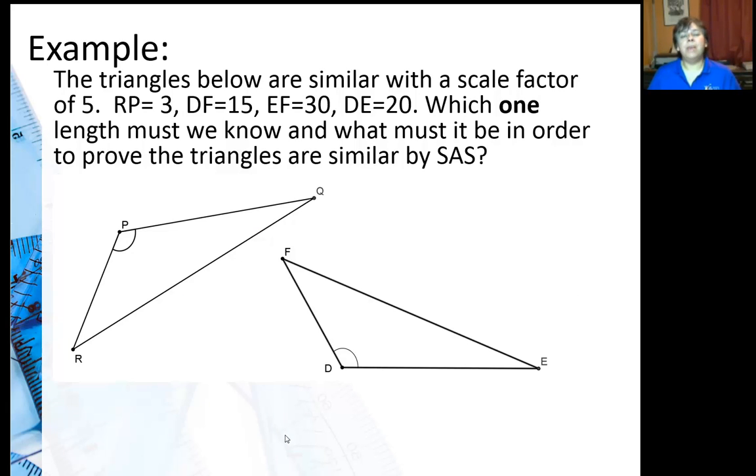So if we're going to use it, I've got this example. The triangles below are similar with a scale factor of five. The only thing I've helped you out with so far is I know angle P and angle D—those angles go together. They're corresponding.